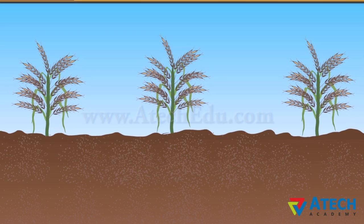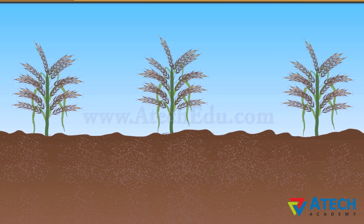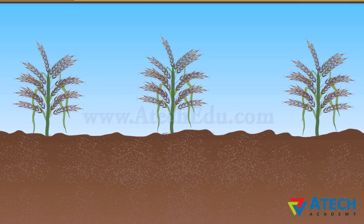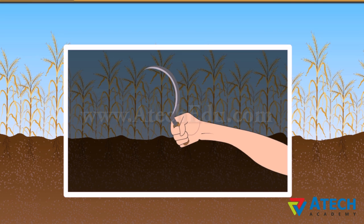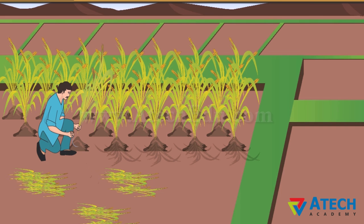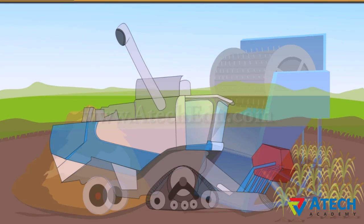The crops are ready now for harvesting. It usually takes three to four months for a cereal crop to mature. The cutting of a crop after it is matured is called harvesting. Harvesting in our country is either done manually by sickle or by a machine called a harvester. In harvesting, crops are pulled out or cut close to the ground.